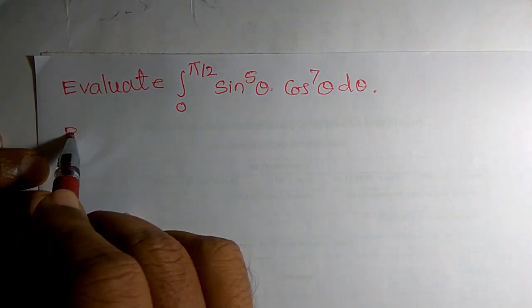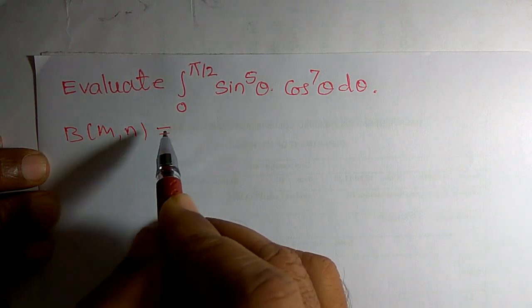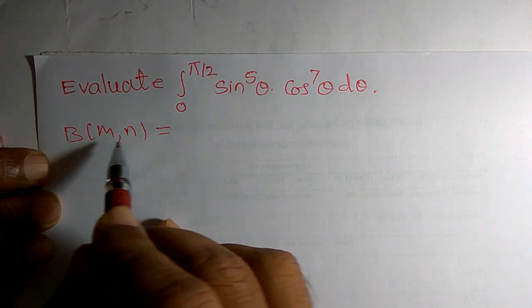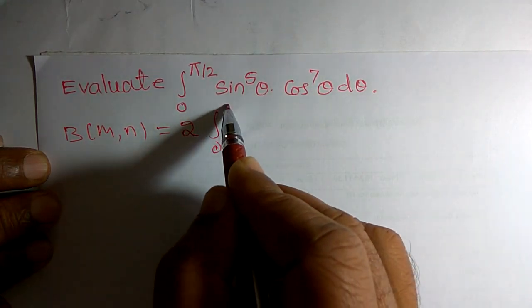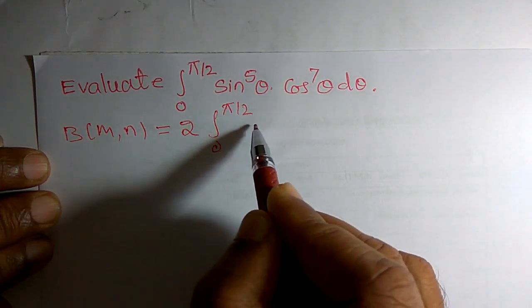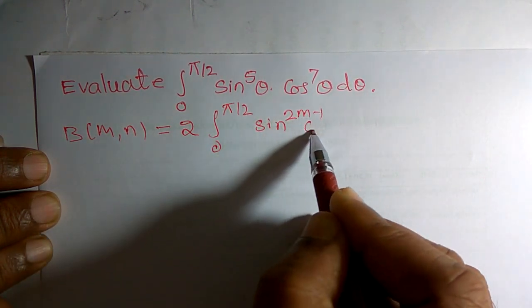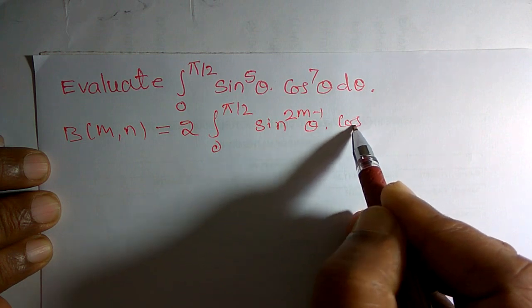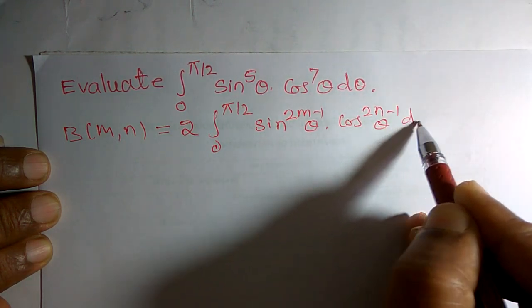We know that one of the property of beta function can be written as B of m,n is equal to 2 times integration of 0 to π by 2 sin raised to 2m minus 1 theta cos raised to 2n minus 1 theta d theta.